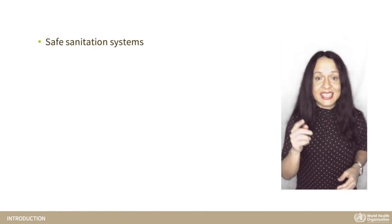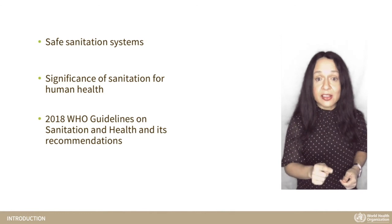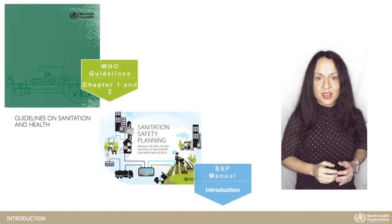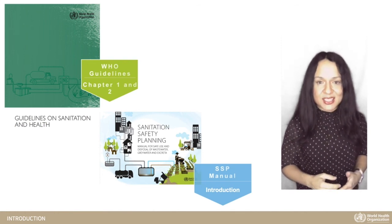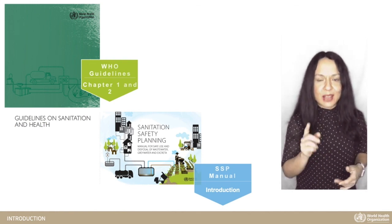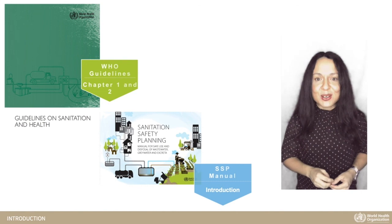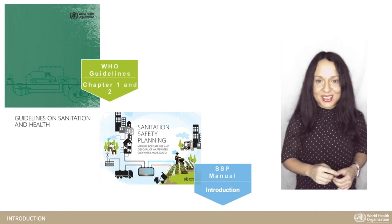In this first lecture, you have learned about safe sanitation systems, the significance of sanitation for human health, the 2018 WHO guidelines on sanitation and health and its recommendations, and the definition of sanitation safety planning, its methodology and benefits. I recommend downloading the 2018 WHO guidelines and learning more about sanitation in Chapter 1, and the recommendations and good practice actions in Chapter 2. You should also download the SSP manual and read the introduction. In the following lecture, we will start implementing the Sanitation Safety Plan methodology, specifically Module 1: Prepare for SSP. Thanks for watching, and Happy SSP!